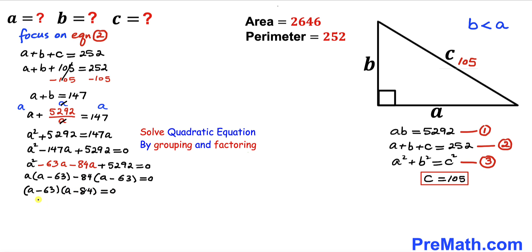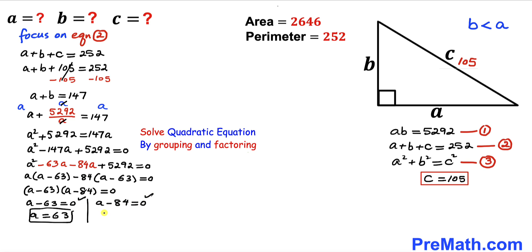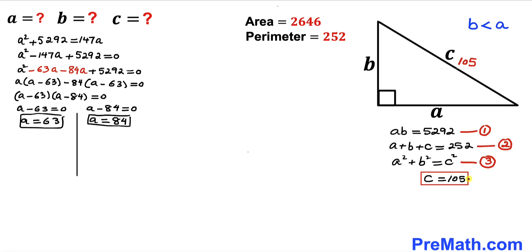Setting each factor equal to zero: A minus 63 equals 0 gives A equals 63, and A minus 84 equals 0 gives A equals 84. So we have two possible values for A.